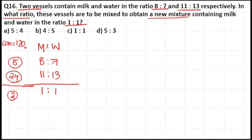15 goes 8 times in 120, so multiply the first ratio with 8. 24 goes 5 times in 120, so multiply the second ratio with 5. 2 goes 60 times in 120, so multiply the resultant mixture ratio with 60.